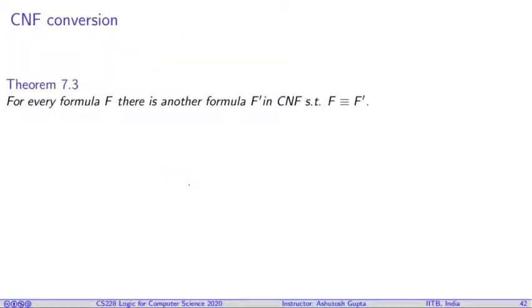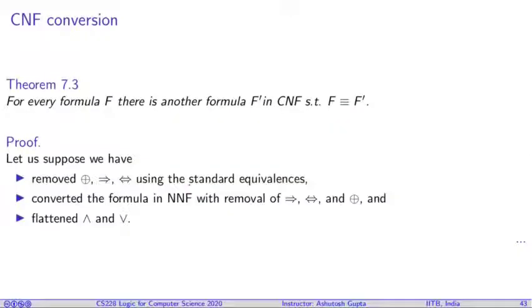Suppose if I give you a formula F, which is not in CNF, there is a transformation which produces another formula F prime that is in CNF and F and F prime both are equivalent. How do we achieve that? First what we do, we remove these symbols, XORs, implications, and equivalents using the standard equivalences. Then we convert the formula in NNF as we have already discussed.